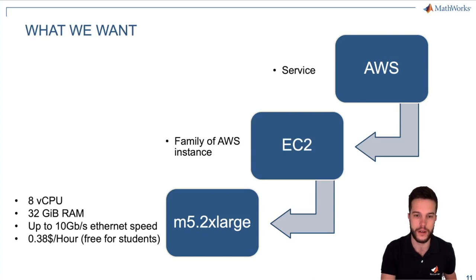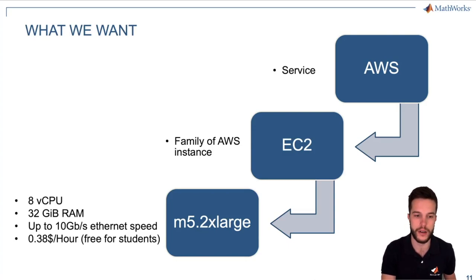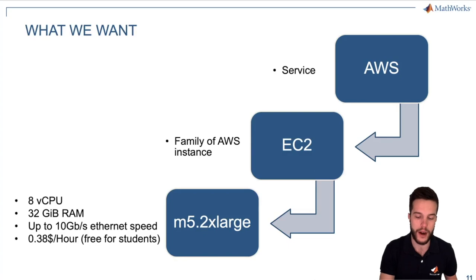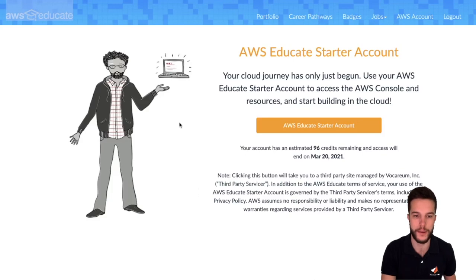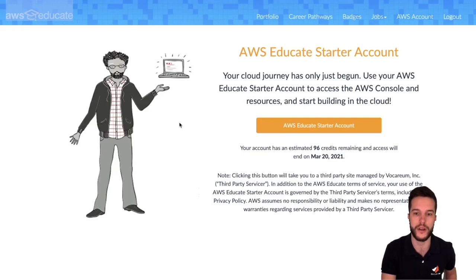EC2 is the family of AWS instances that we will use today. In particular, the machine we will use is the M5-2xlarge. It has 8 virtual CPUs, 32 GB of RAM, and up to 10 GB per second of connection. Without the student subscription, you need to pay 38 cents per hour to use it. But that's not our case.